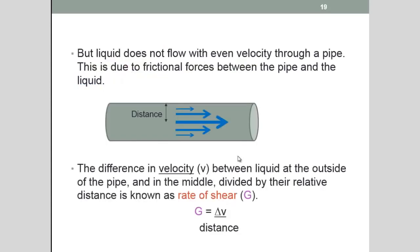But liquid generally doesn't flow with an even or identical velocity through a pipe. And this is due to the frictional forces between the pipe and the liquid. So the liquid will flow at a slower velocity closer to the pipe's actual circumference. And in the middle will flow faster. The difference in velocity between the liquid at the outside of the pipe and in the middle, divided by their relative distance, is known as the rate of shear, or g. So the difference in velocity and the difference in their distance.